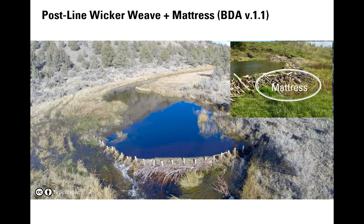Moving to iteration two, we began incorporating what we call the mattress — downstream sticks oriented parallel to flow that break up flow as it comes over the top of the structure. This cue came directly from natural beaver dams: when you look at the profile of a natural beaver dam, it's not wall-like but more triangular or pyramid-like. We began incorporating willow on the downstream side to replicate this. The wicker weave was still dominant, so still vulnerable to barn-door breaching, but it did help limit scour on the downstream side.